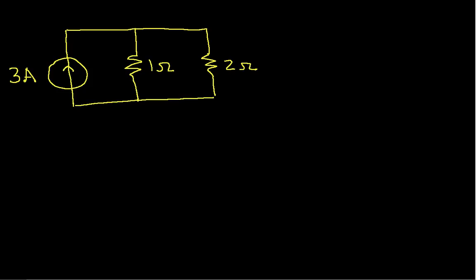The goal in using the current divider is we want to find the current that flows through the 1 ohm resistor and the current that flows through the 2 ohm resistor. Now, it turns out what happens is the 3 amps that flows out of the source splits. Some of it will flow through the 1 ohm resistor, and some of it will flow through the 2 ohm resistor.